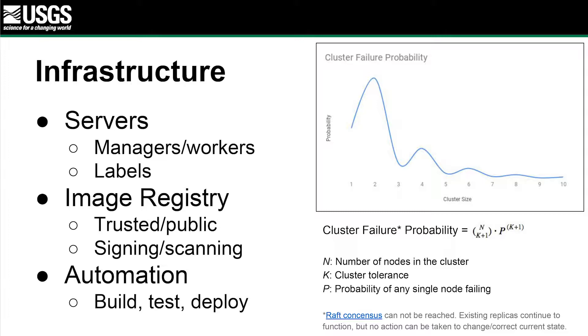First, let's talk about infrastructure. Servers can be on-prem, virtualized, or in the cloud — you need somewhere to deploy. We're going to talk mostly about Docker and Docker Swarm, but this applies equally to Kubernetes and other platforms like OpenShift or Pivotal. A lot of the concepts are one-to-one or very analogous across these platforms.